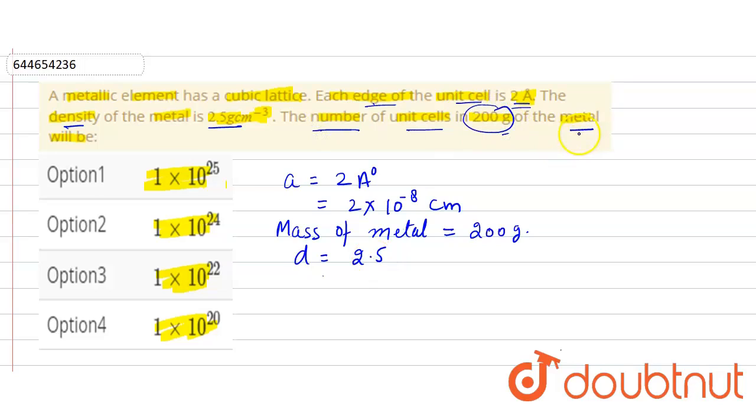So here we need to find the number of unit cells in 200 gram. So firstly we will calculate volume of one unit cell which is a cube.